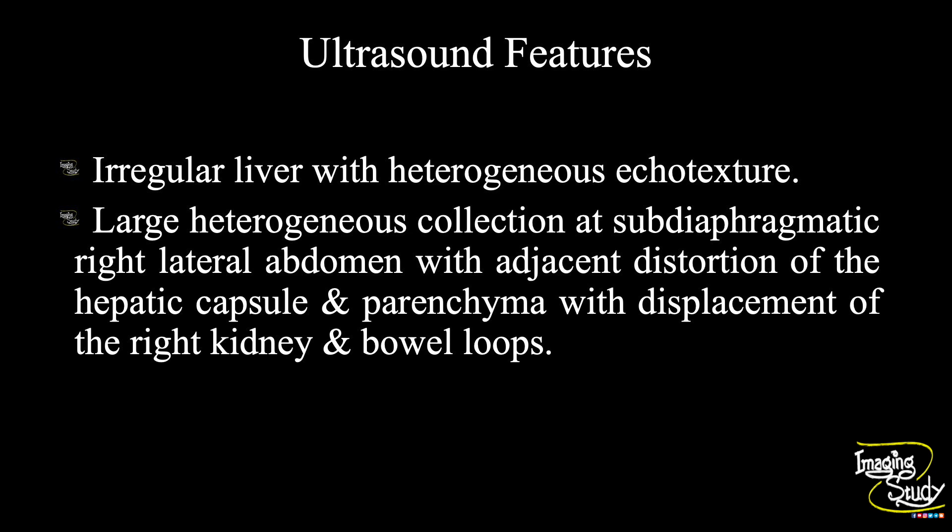So in summary, the liver is irregular with heterogeneous echotexture. A large heterogeneous collection is noted at sub-diaphragmatic right lateral abdomen with adjacent distortion of the hepatic capsule and parenchyma with displacement of the right kidney and bowel loops. These features suggest it as a case of hepatic hematoma.